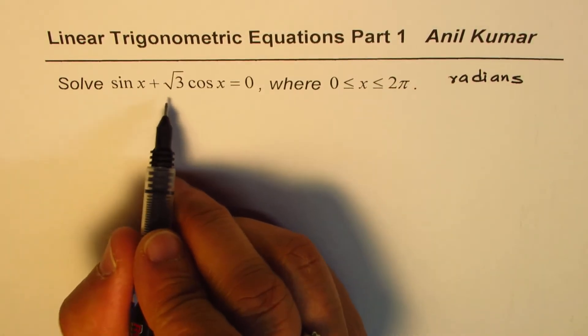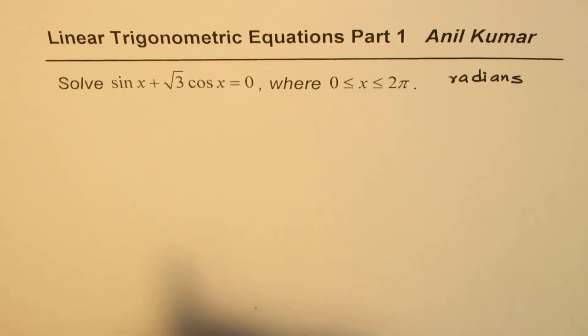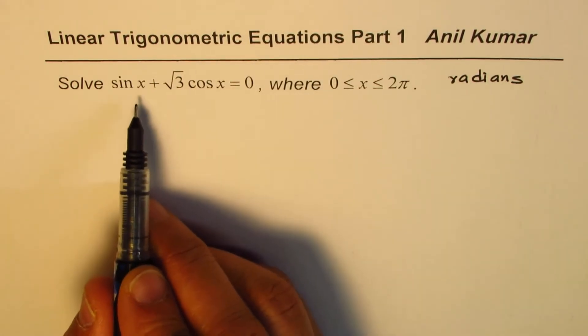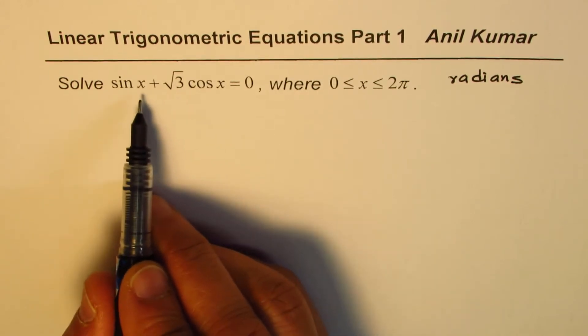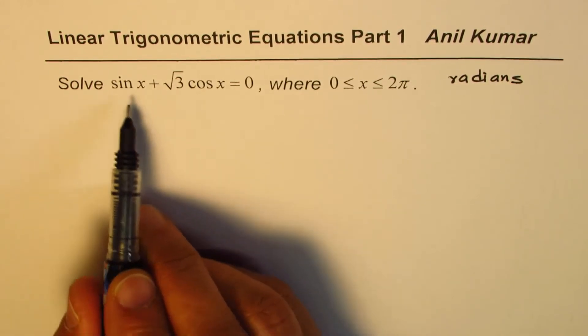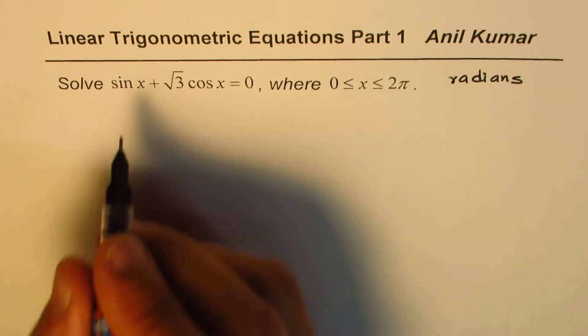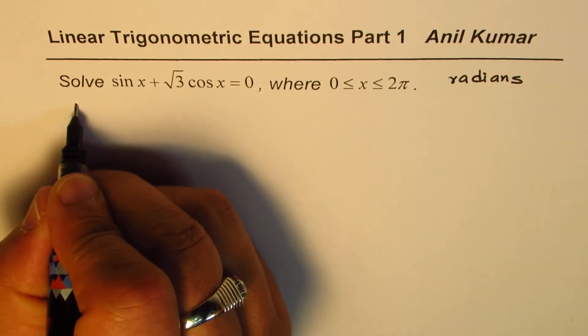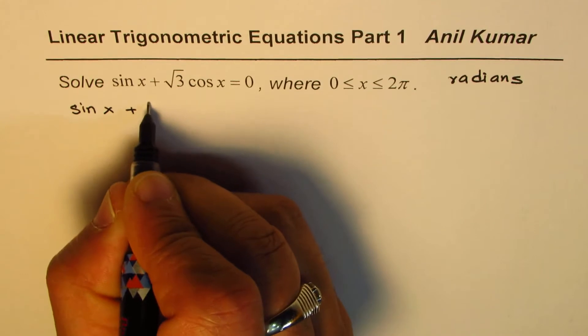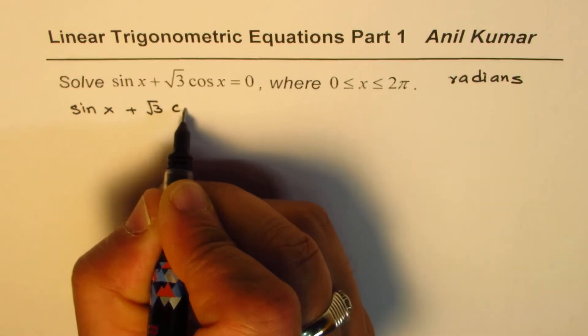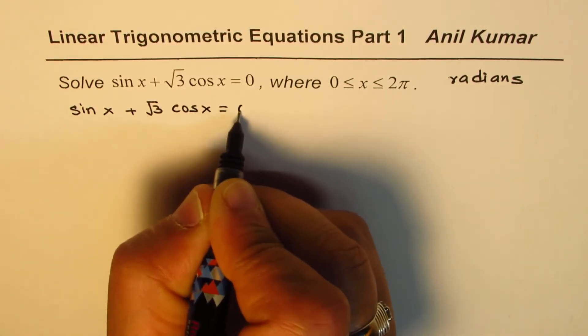Now we have sin x plus square root 3 cos x. This is a typical equation where we do not have same trigonometric ratios. Now at times it could be very difficult. Let me show you how to solve it. We could write this equation as sin x plus square root 3 cos x equals 0.